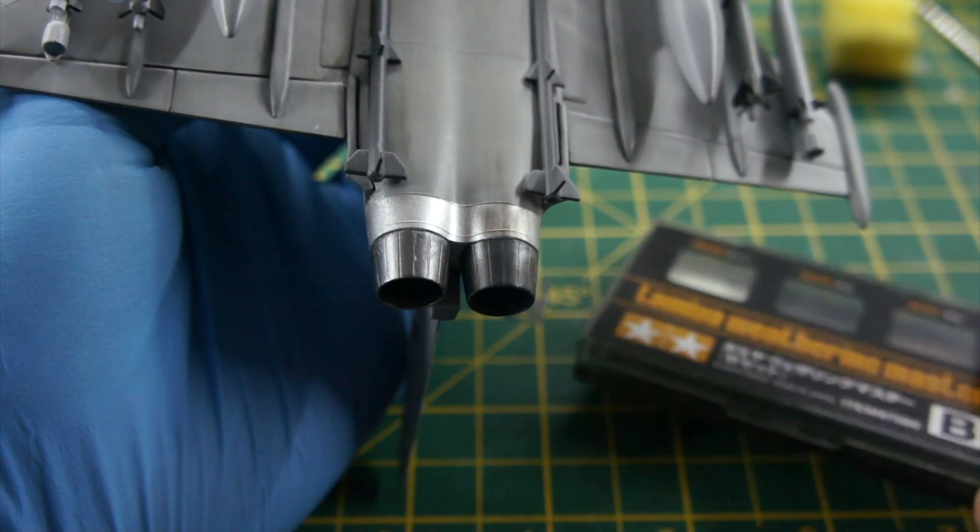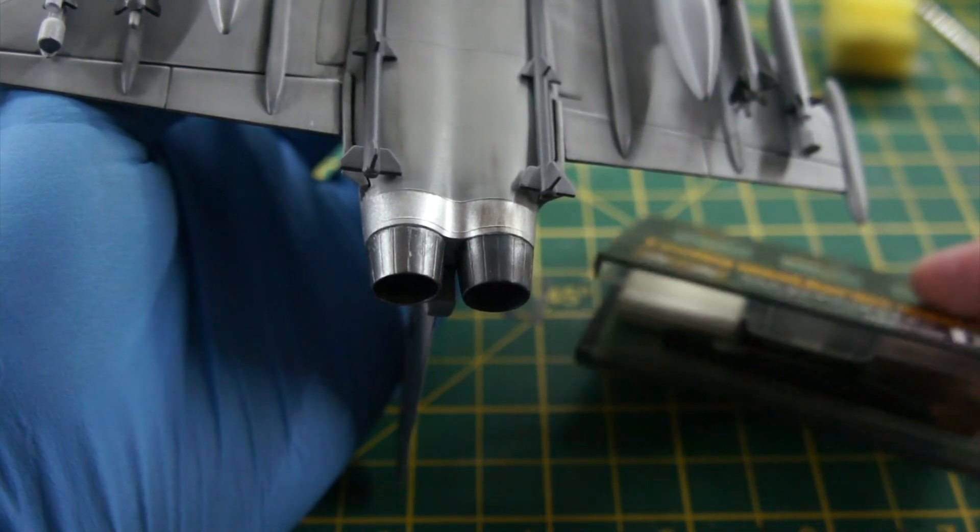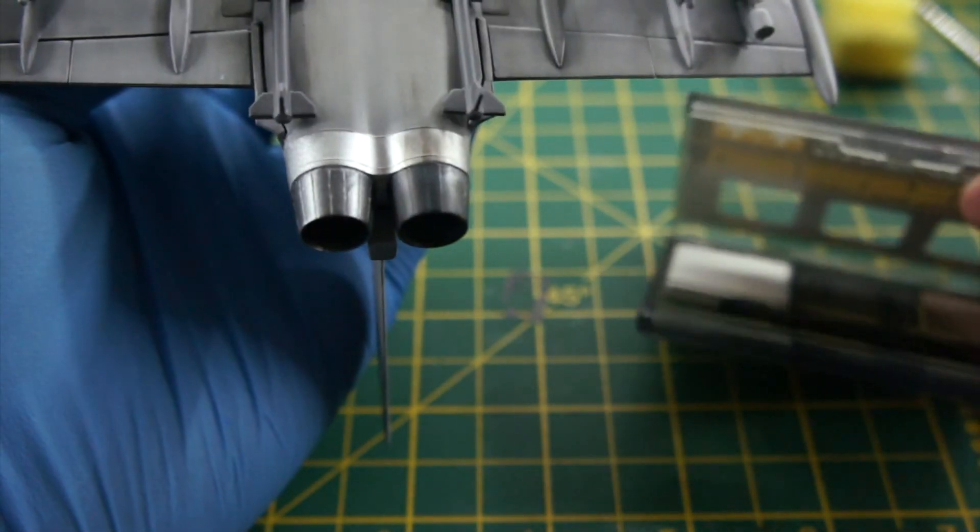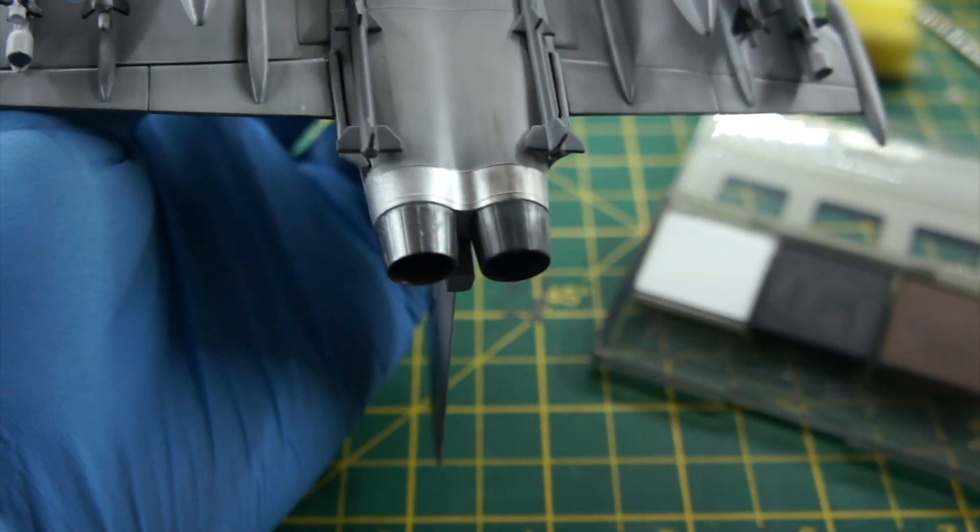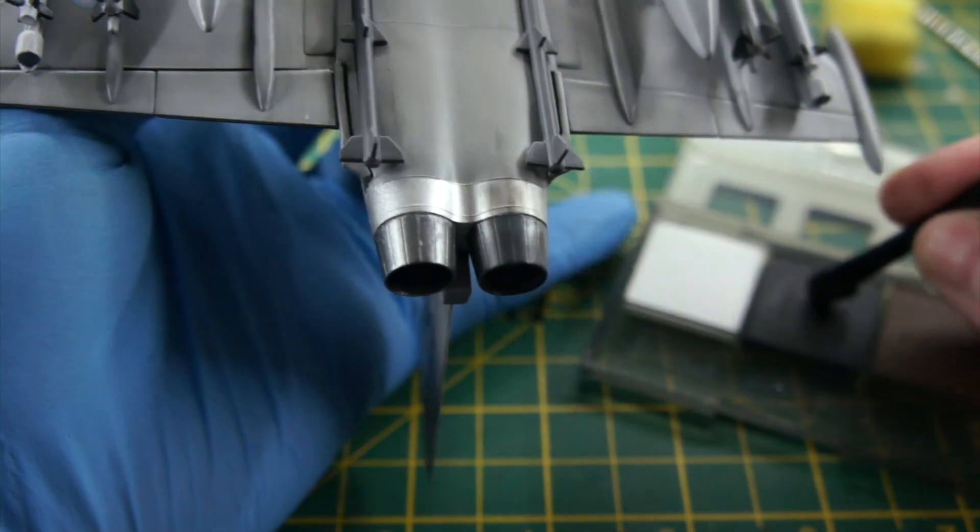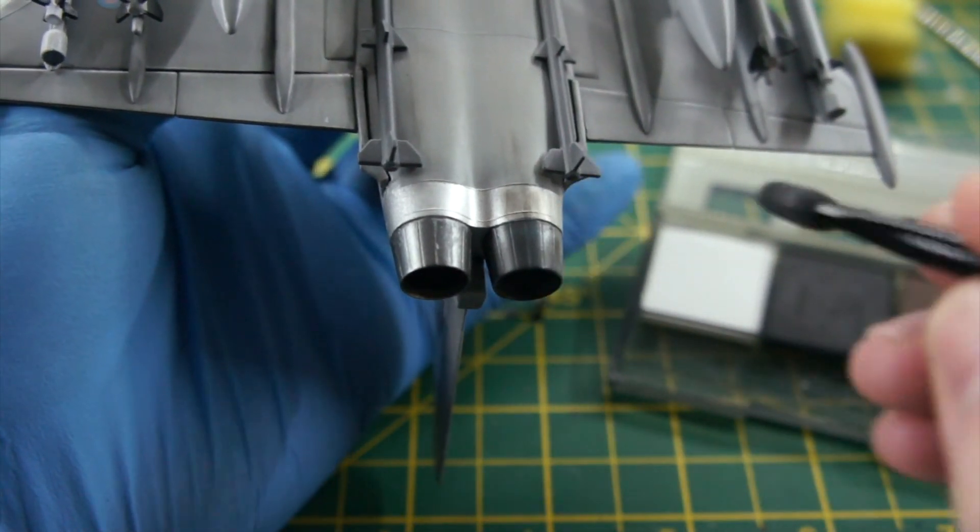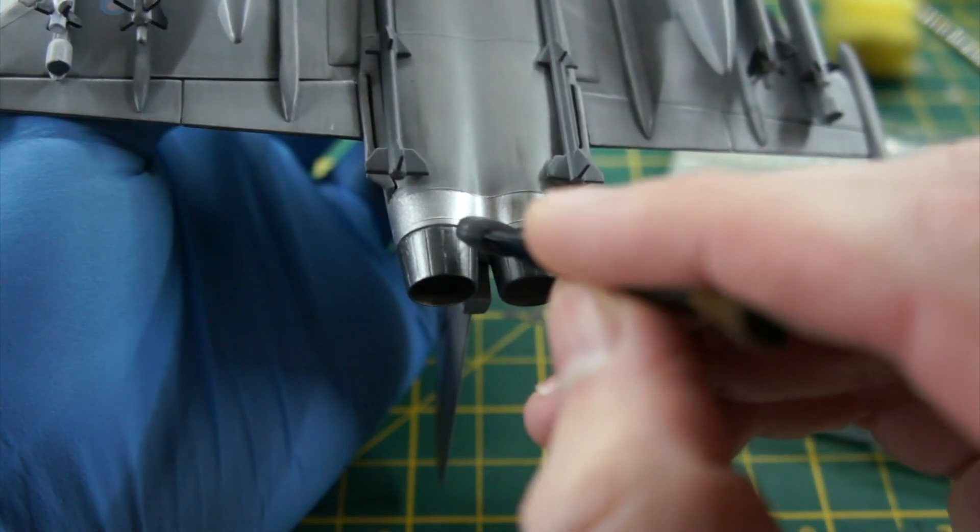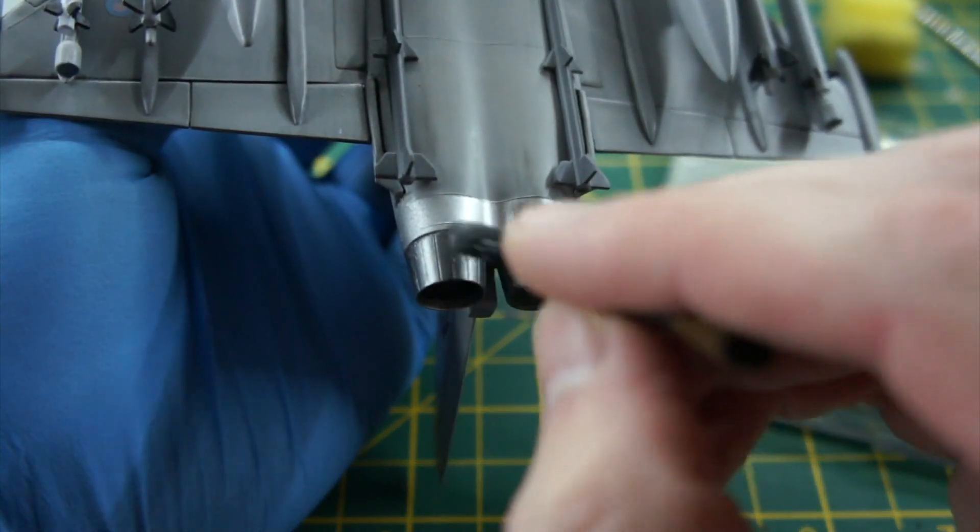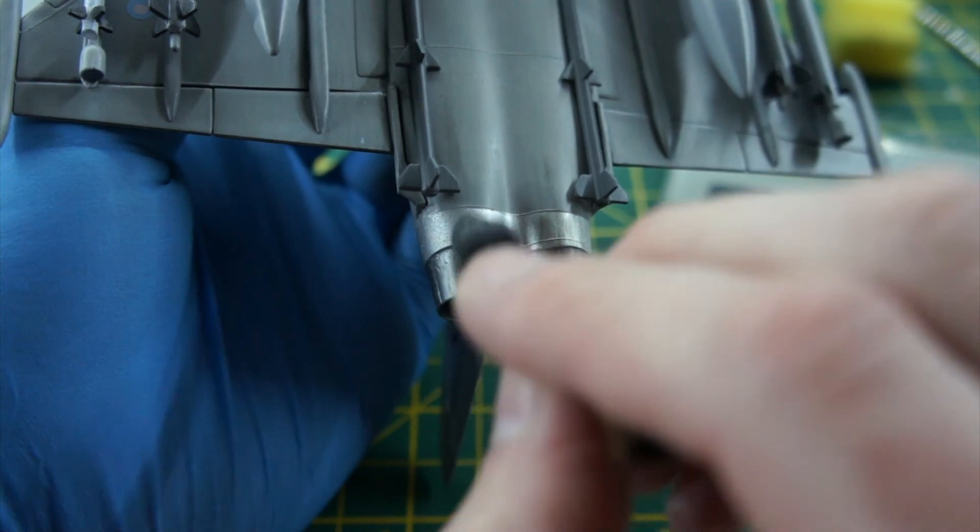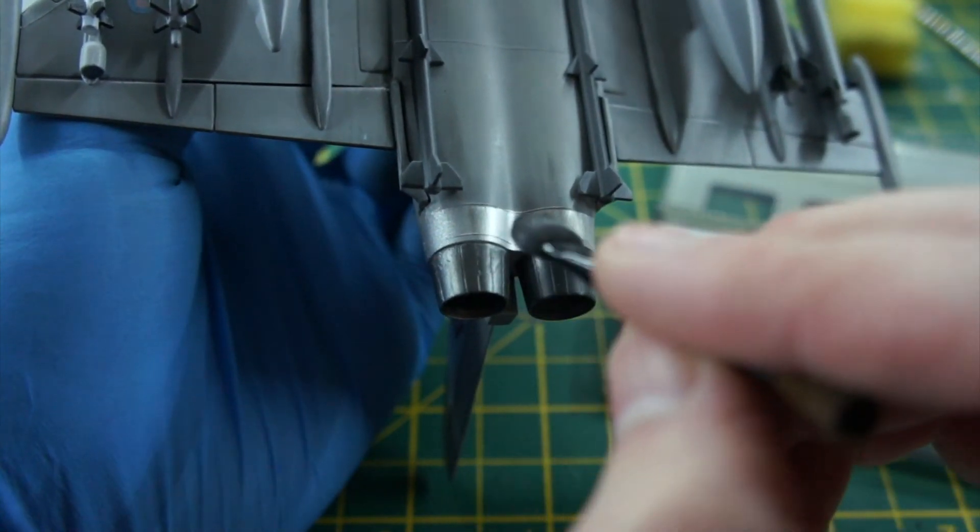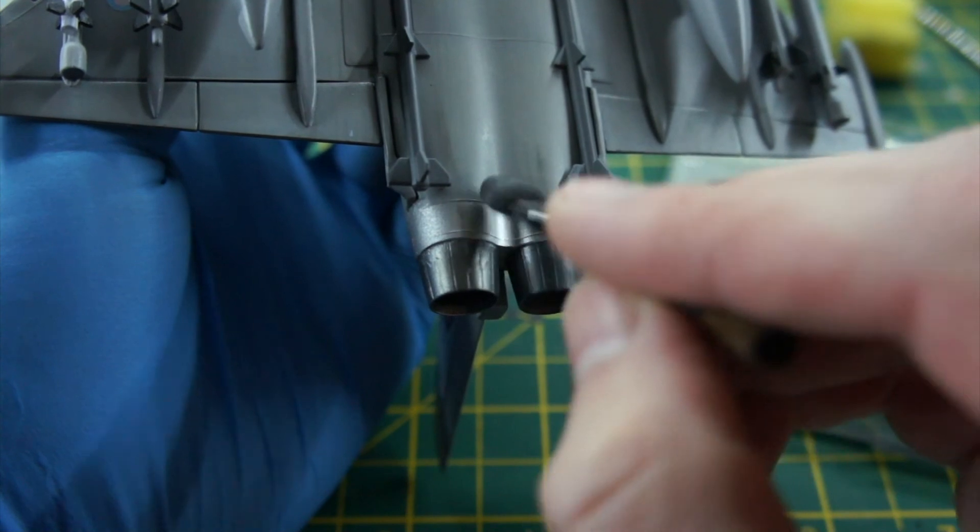I finished it off with the Tamiya Weathering Master. I had set B and just added a little bit of black with the applicator just around the exhaust, just to break up that silver X-11 that you can see. Again, where there would be some buildup, just to dirty it off. Yeah, it came out quite nicely, I was very happy.